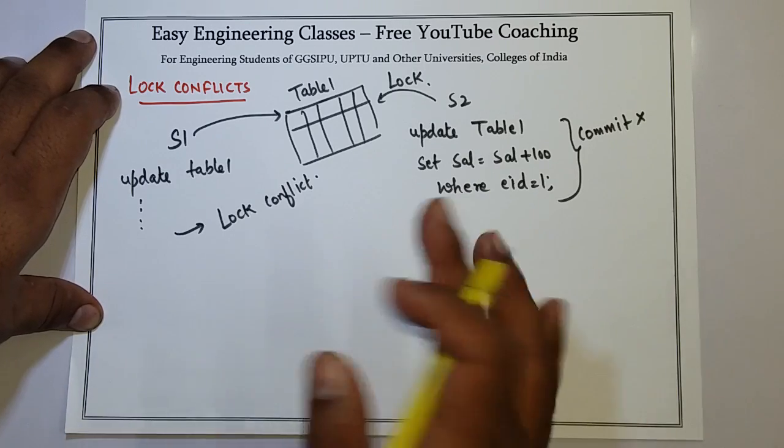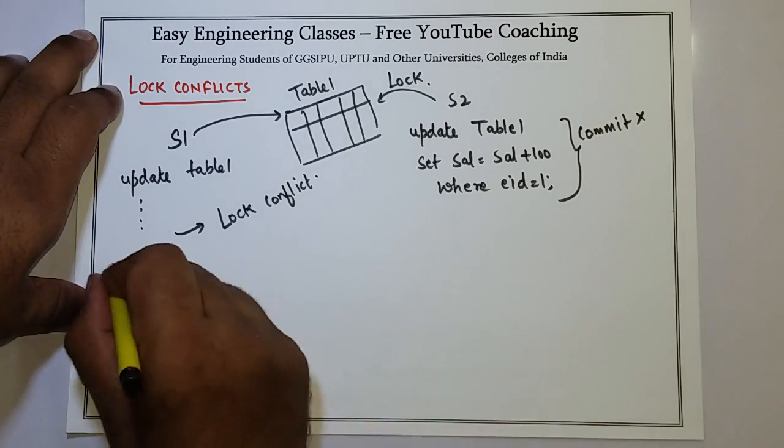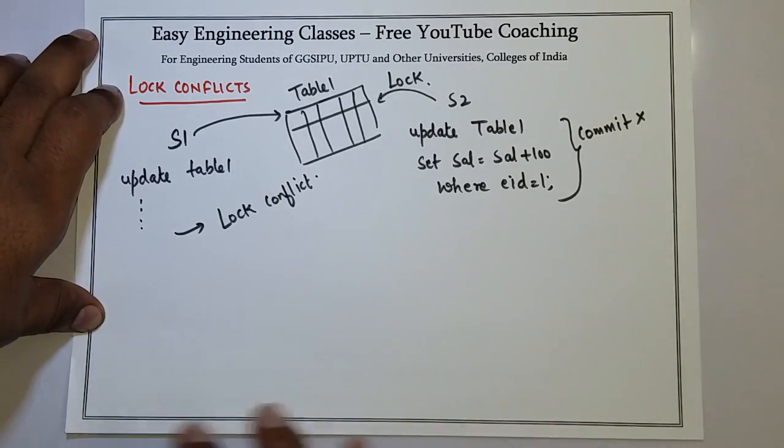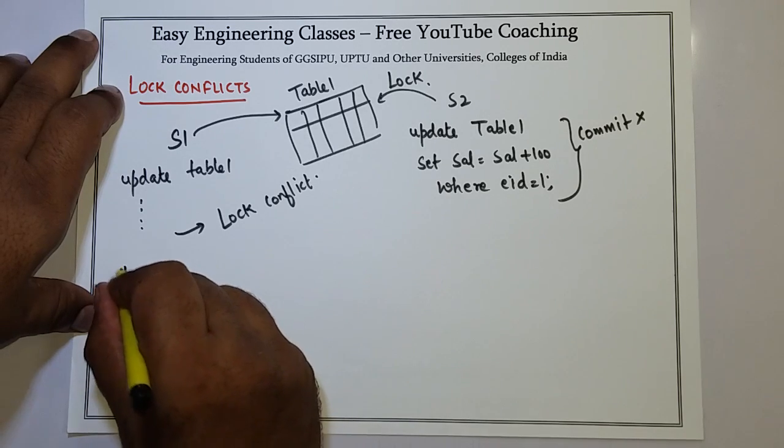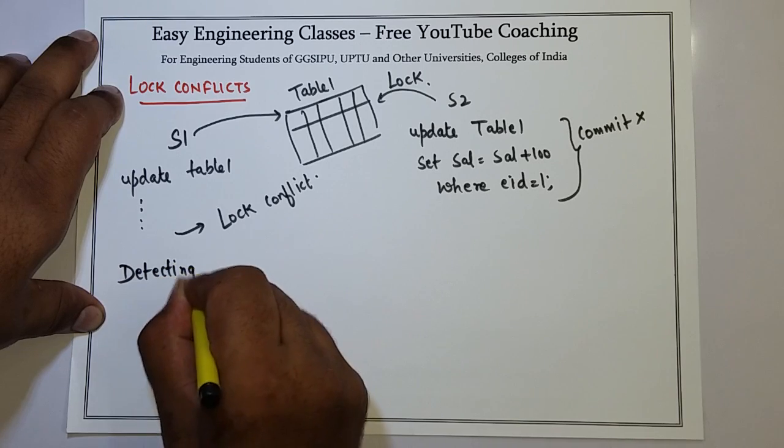Now how a database administrator can detect that lock conflict has occurred is explained in this session, in this part of the lecture. So next part deals with detecting lock conflict.